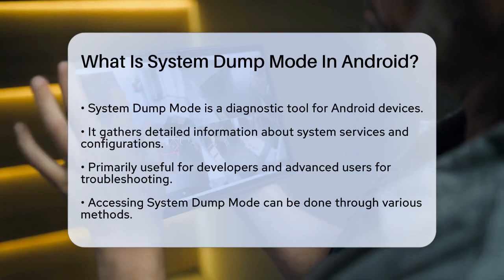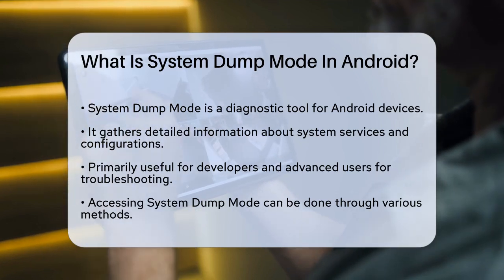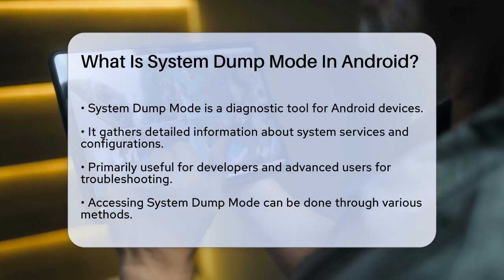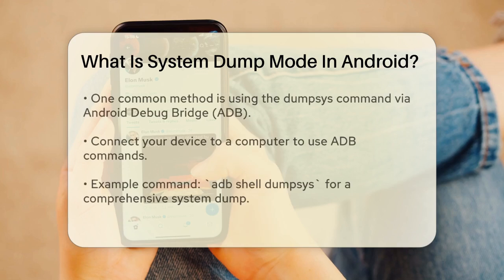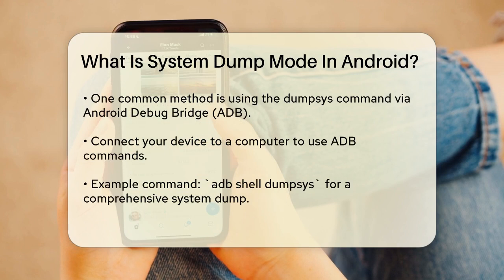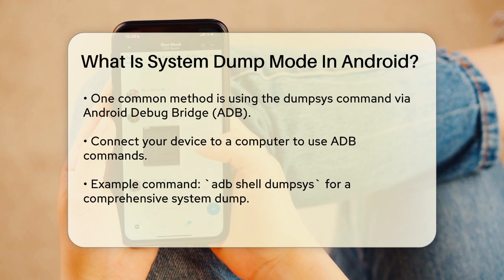To enter System Dump Mode, you can use a few different methods. One common way is by using the command through the Android Debug Bridge, ADB. You can access this by connecting your device to your computer, opening a command prompt, and typing adb shell dumpsys. This command provides a comprehensive dump of all system services running on your device, which can be quite verbose, so it's often better to specify the service you're interested in, like adb shell dumpsys input for input diagnostics.